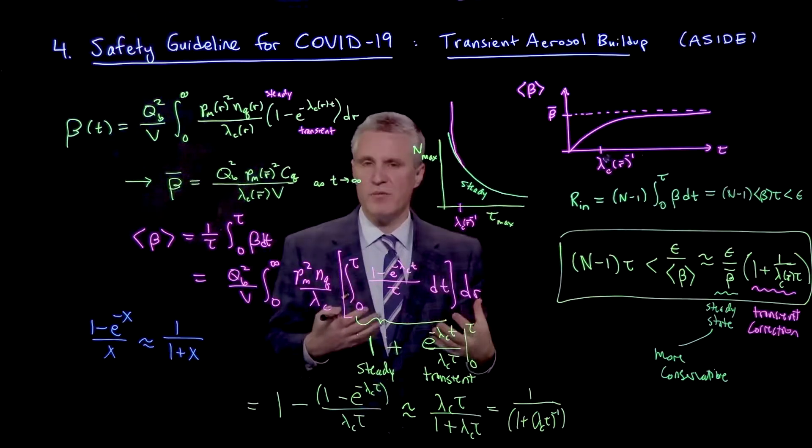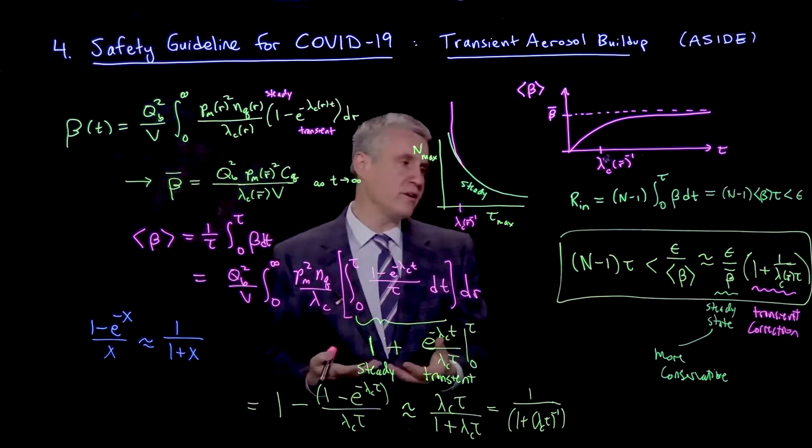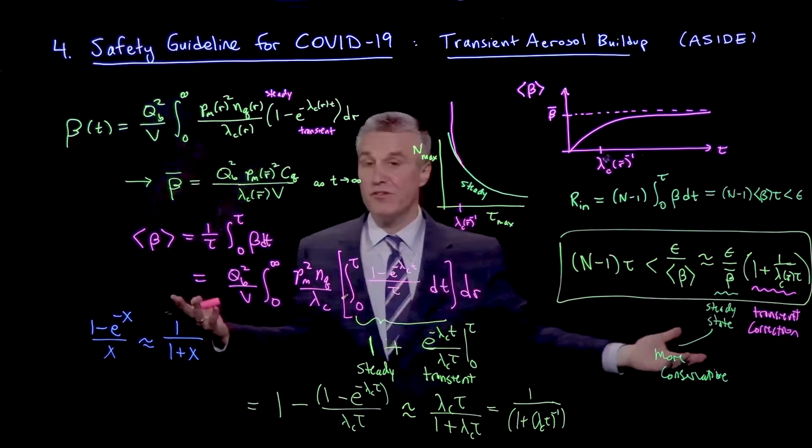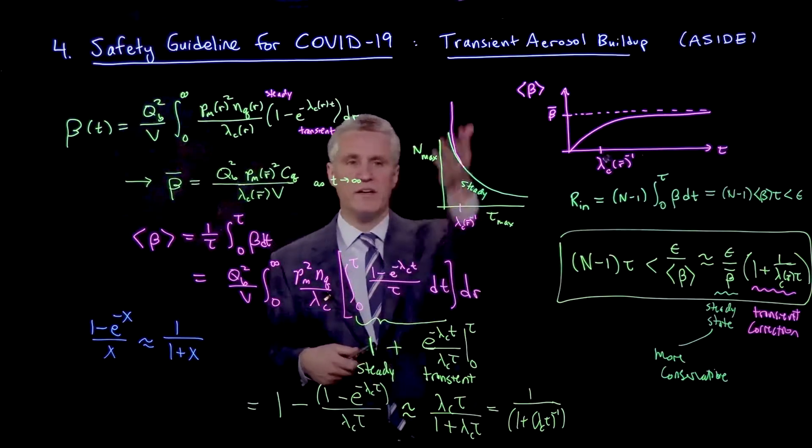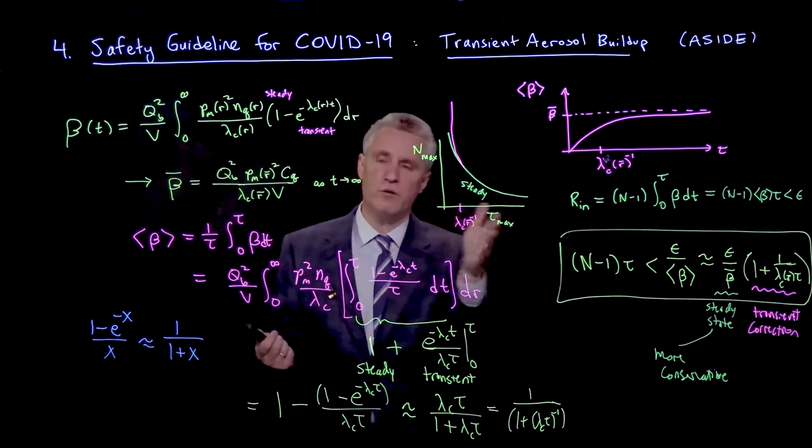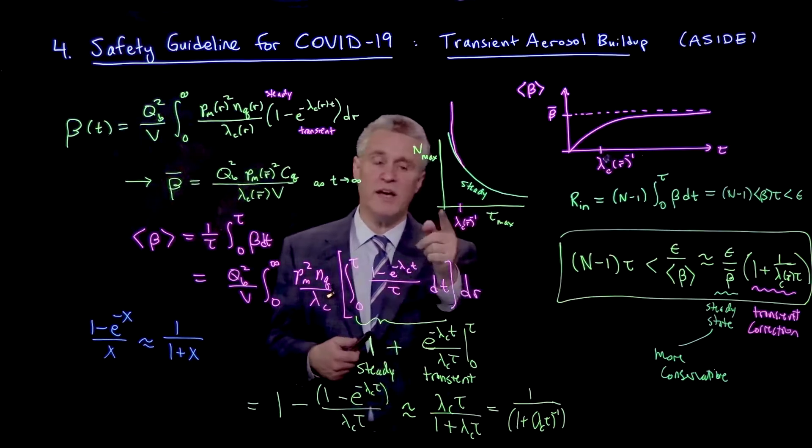So what it kind of helps to capture is, again, this intuition that if I put in like tau is extremely small, then of course the risk goes away, and I can have larger numbers of people in the room, or I can tolerate smaller times and actually be safe.